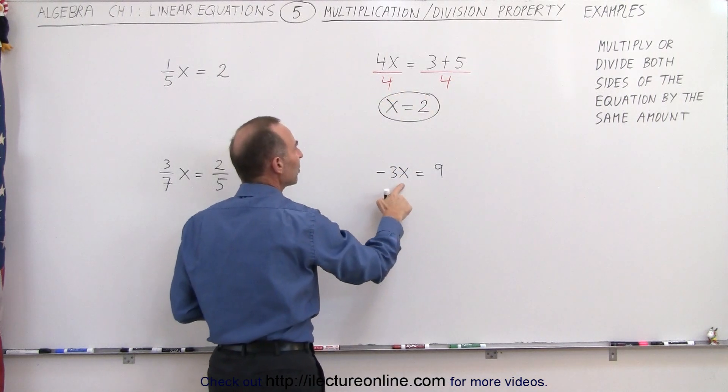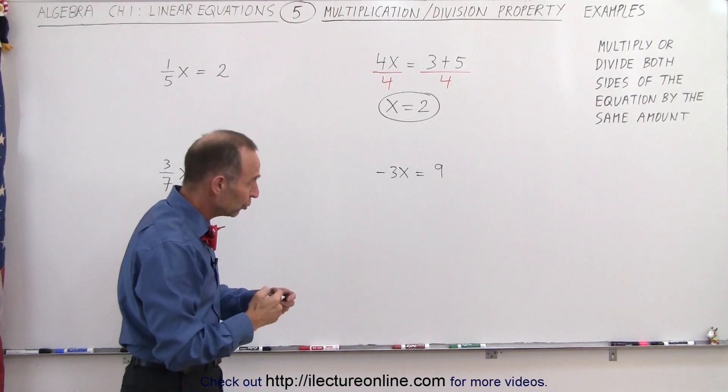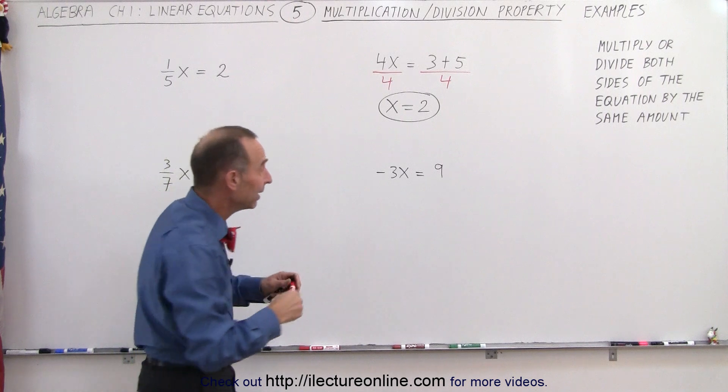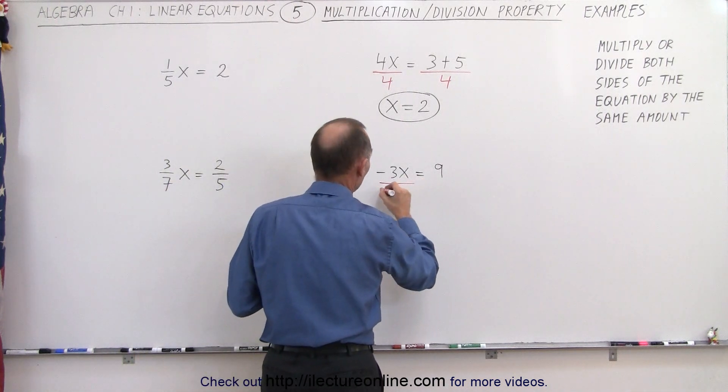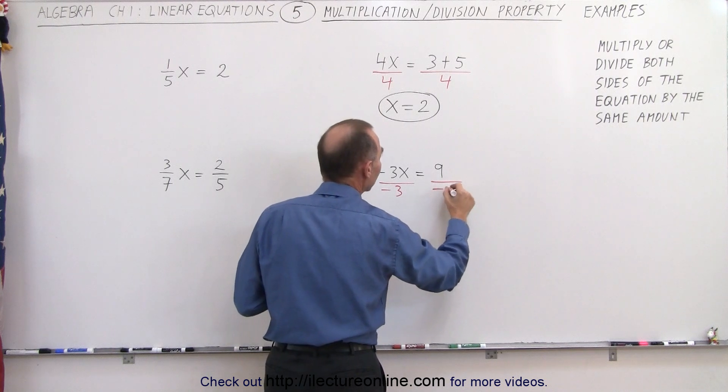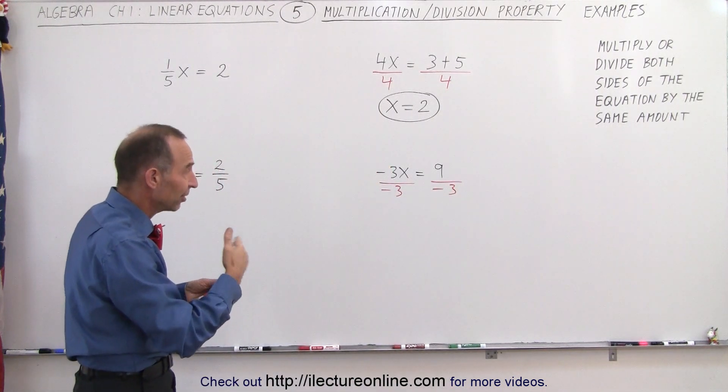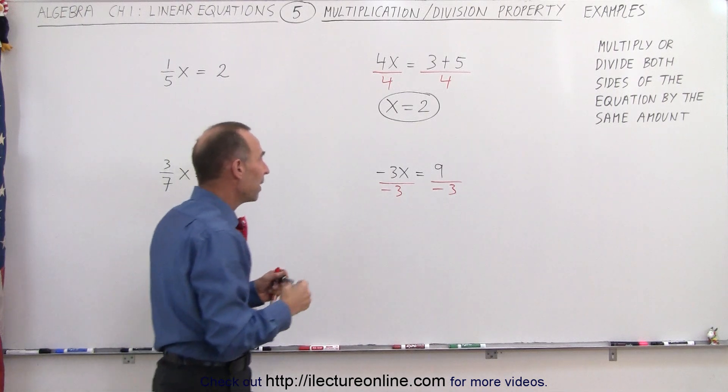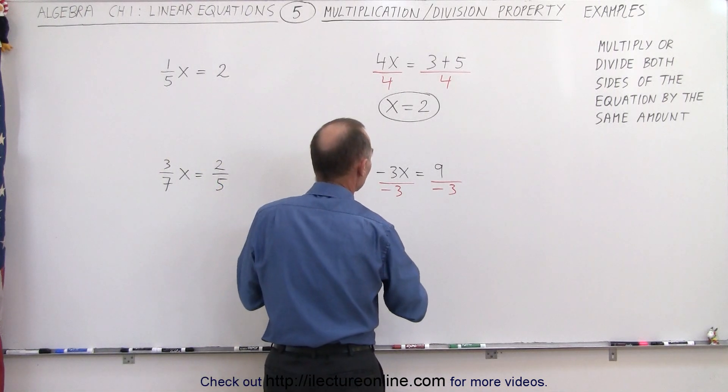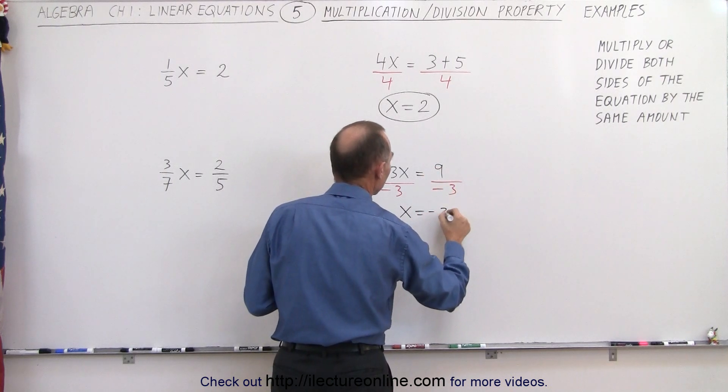Here we have minus 3x equals 9. I want to get rid of the minus 3 on the left side, I can do that by dividing the left side by negative 3. Of course, if I divide the left side by negative 3, I need to divide the right side by negative 3 as well. Now the left side still equals the right side. Minus 3x divided by minus 3 is simply equal to x, and 9 divided by negative 3 is equal to negative 3.